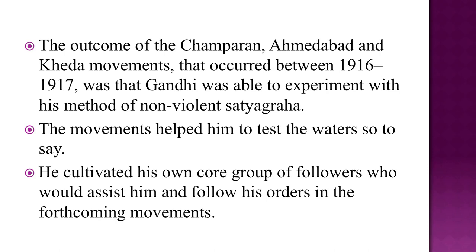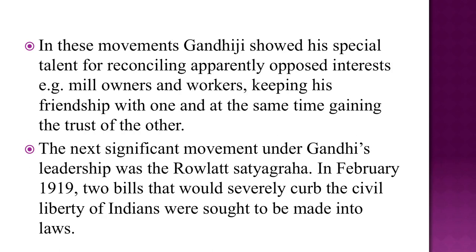The outcome of the Champaran, Ahmedabad, and Kheda movements that occurred between 1916 and 1917 was that Gandhi was able to experiment with his method of non-violent Satyagraha. The movements helped him test the waters. He cultivated his own core group of workers who would assist him in forthcoming movements. Gandhiji showed his special talent for reconciling apparently opposed interests — for example, mill owners and workers — keeping his friendship with one while gaining the trust of the other.